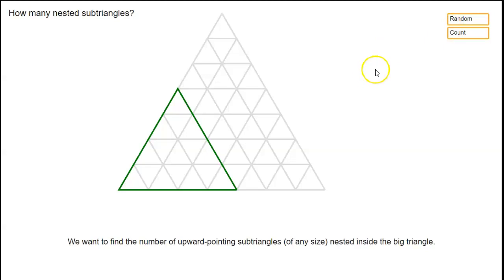There's a bunch of other triangles of various sizes nested inside this big size 7 triangle. Here's a random selection of them, and so the question is how many different sub-triangles like this are there? Again only counting the ones that point upwards.